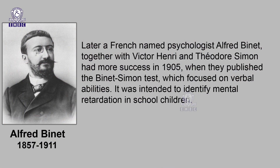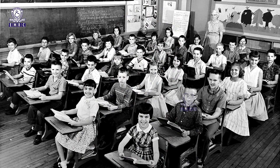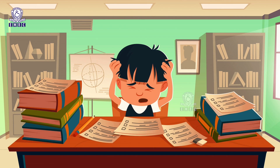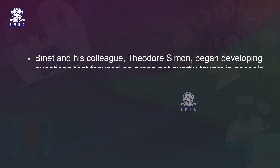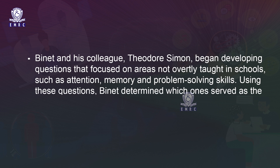Later, French psychologist Alfred Binet, together with Victor Henry and Theodore Simon, had more success in 1905 when they published the Binet-Simon Test, which focused on verbal abilities and was intended to identify mental retardation in school children. During the early 1900s, the French government asked Binet to help identify students likely to experience difficulty in school. Binet and Simon began developing questions focused on attention, memory, and problem-solving skills.